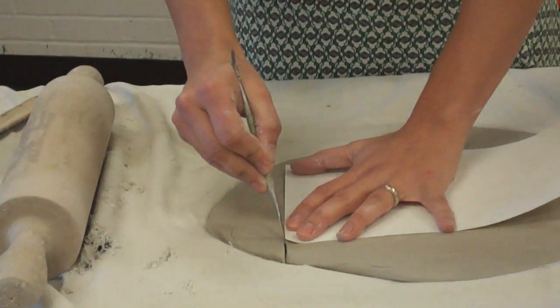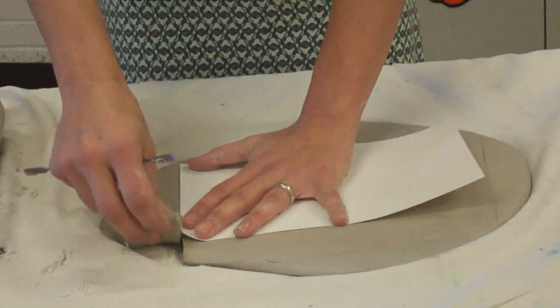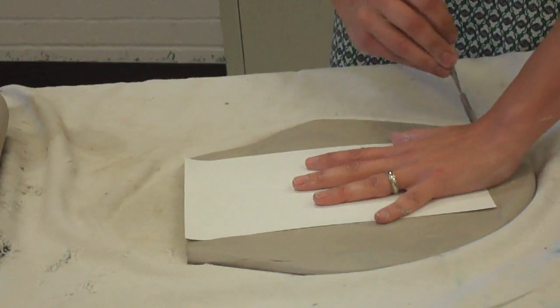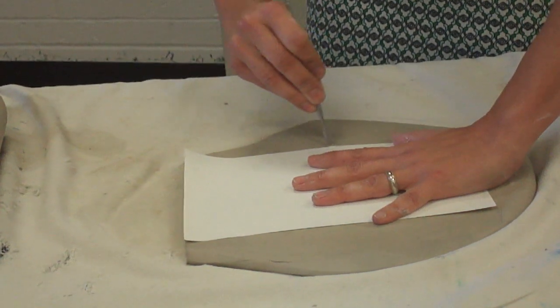The first time that you cut through your clay, it's going to be what I like to call a rough cut. The rough cut is just so that you can get the general shape, and it's also so that you can see the thickness of your clay.